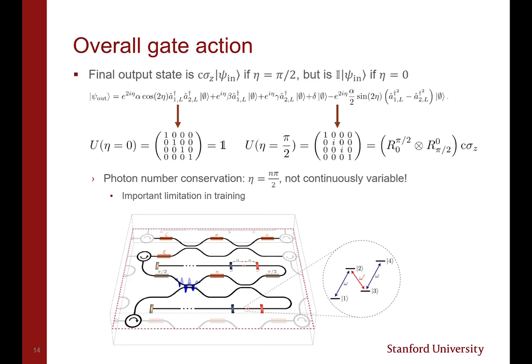At the end of the gate operation, the final output state is equal to controlled-Z times the input state if the η phase shifter is set to π/2, which allows the two photon pulses to overlap and interact with the same quantum emitter. But if η is set to 0, then the output state is identity times the input state, as the photon pulses are each directed to separate quantum emitters, disabling the gate action.